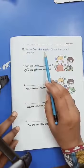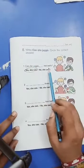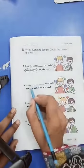Write can she juggle, circle the correct answer. Can she juggle two balls? Can she juggle two balls? Yes she can. Then you have to write can she juggle three balls.